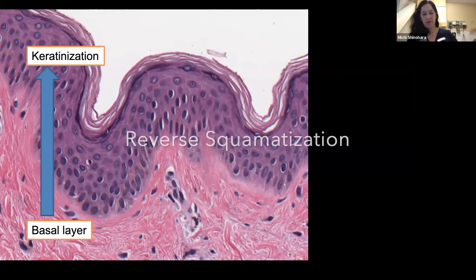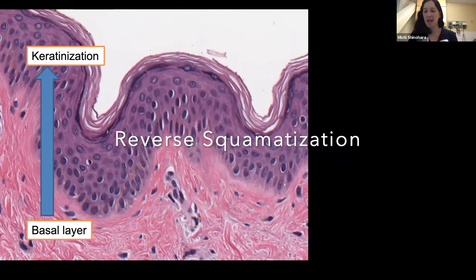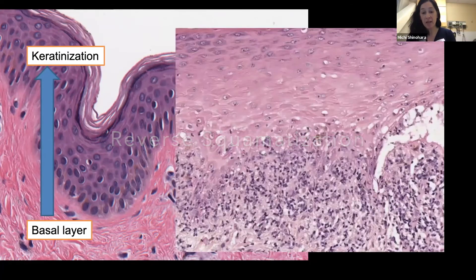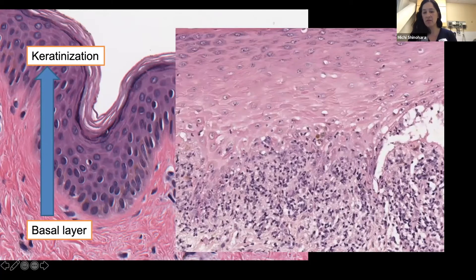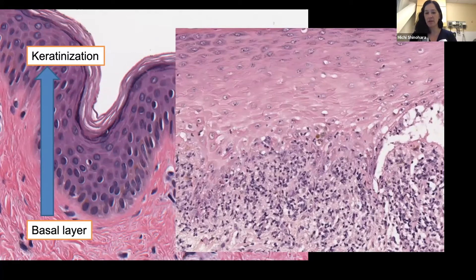The epidermis differentiates from the basal layer up — as we go up, it becomes more keratinized and squamous. In lichenoid conditions, there's reverse squamatization, where the base of the epidermis is more pink. In many other squamous epithelia, reverse squamatization is a sign of atypia or even malignancy, so it's very common — especially for pathology trainees who've looked at cervical epithelium first — to look at this and overcall atypia in the skin.